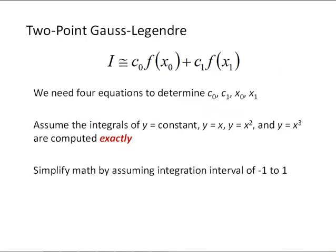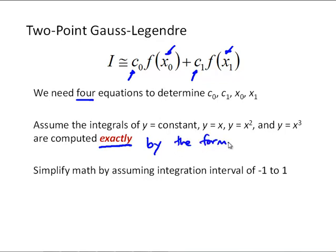For a two-point Gauss-Legendre formula, we have two unknown weighting coefficients and two unknown x values, so in total we need four equations to determine our four unknowns: c0, c1, x0, and x1. The approach for Gauss-Legendre is to assume that the integrals of the functions y equals a constant, y equals x, y equals x squared, and y equals x cubed are computed exactly by our formula. We'll use those four constraints to develop four equations.